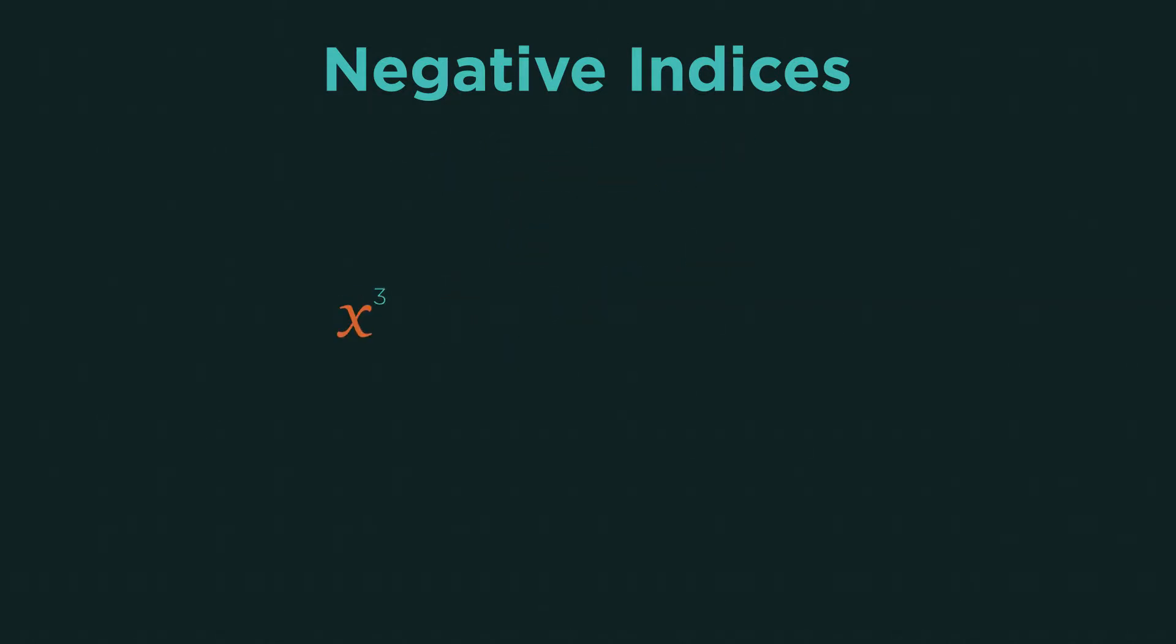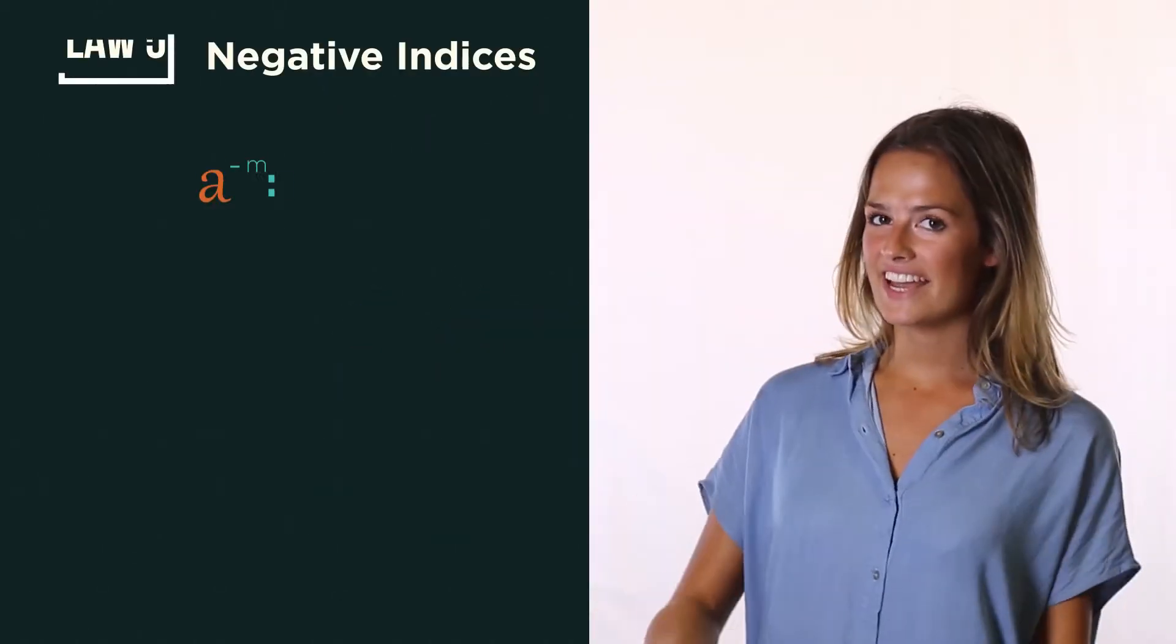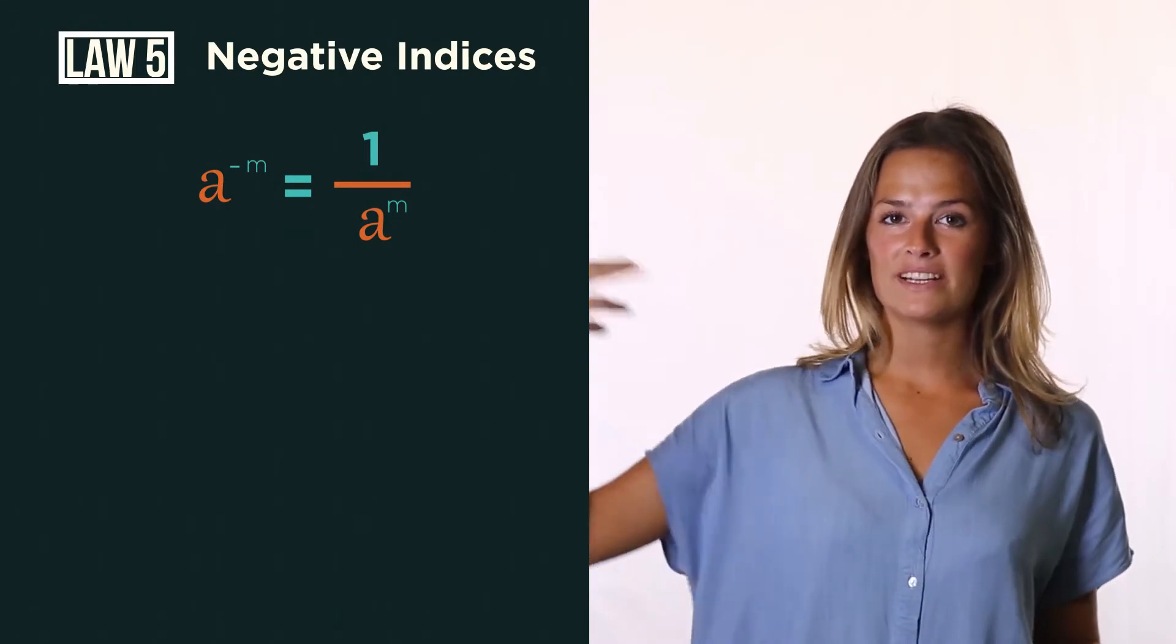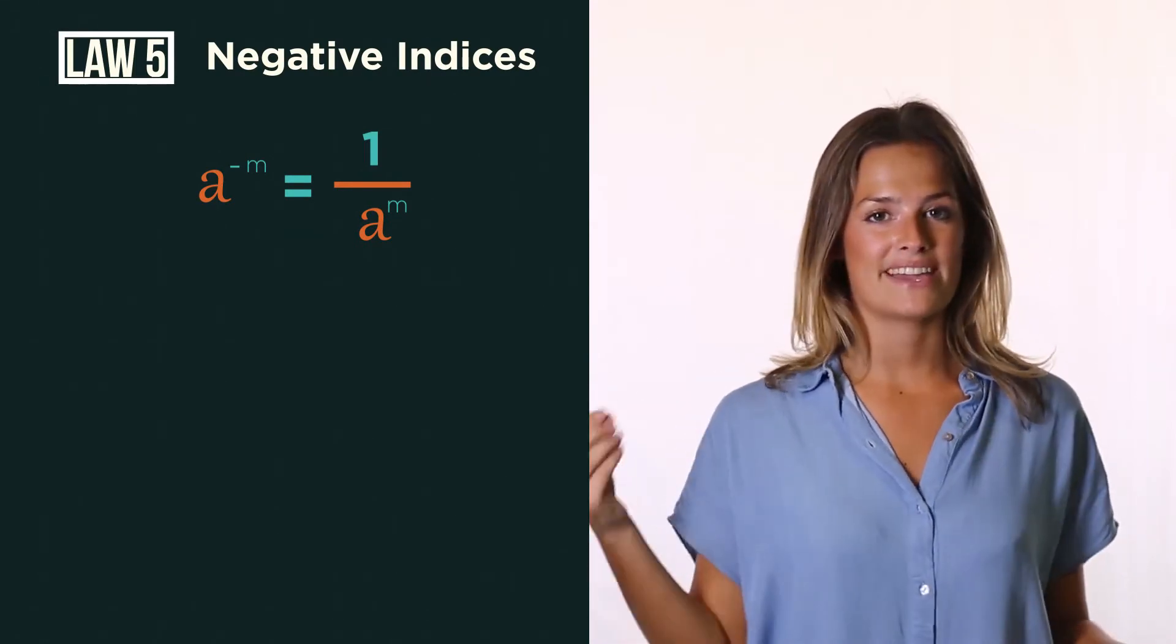So x to the power of three divided by x to the power of five is x to the negative two, but it's also one divided by x squared. So see how x to the negative two is one divided by x squared. So for negative indices, we drop it down to the denominator and make it positive.